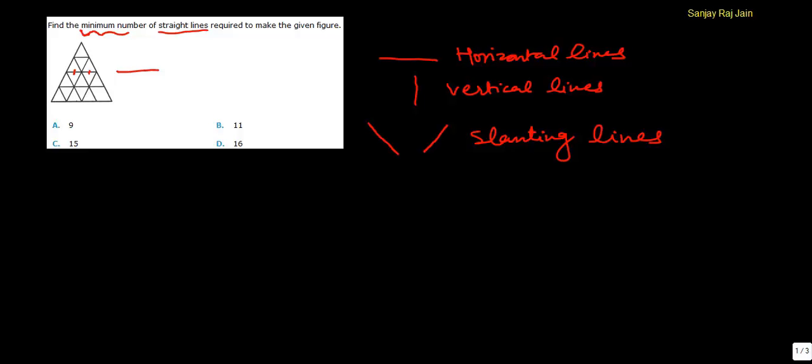So we need to count these three categories of lines one by one and then find our answer, find the total number of straight lines. So let's solve this question now. Our first step would be to count number of horizontal lines. Let me mark these vertices to make it easier for you to understand.